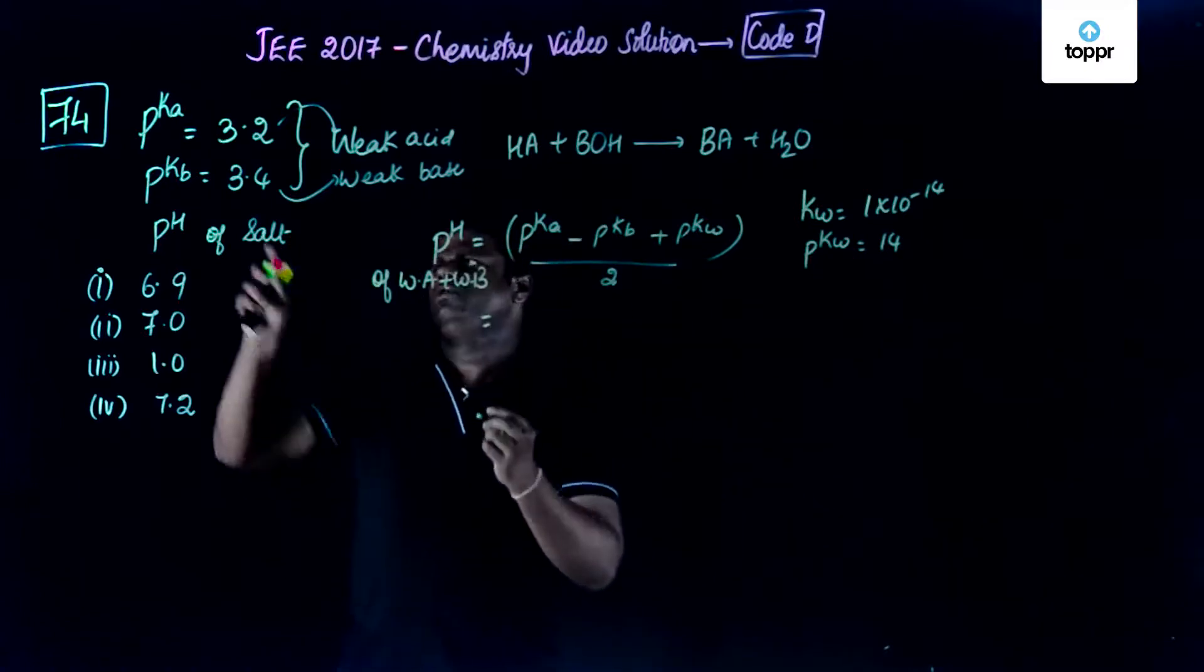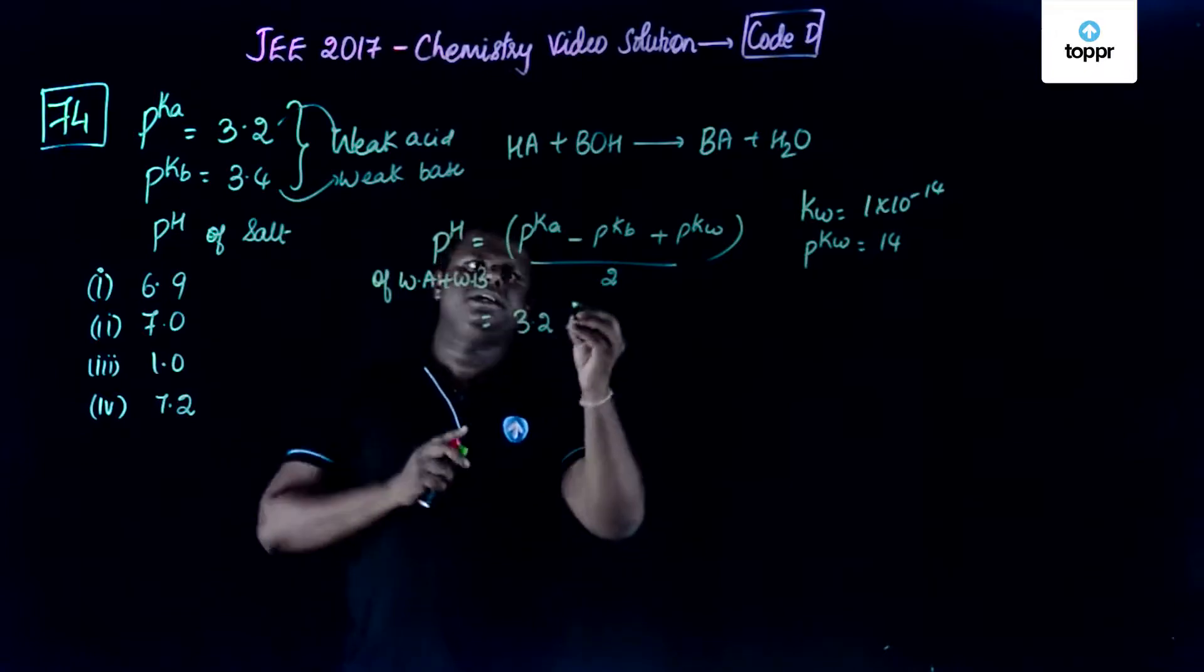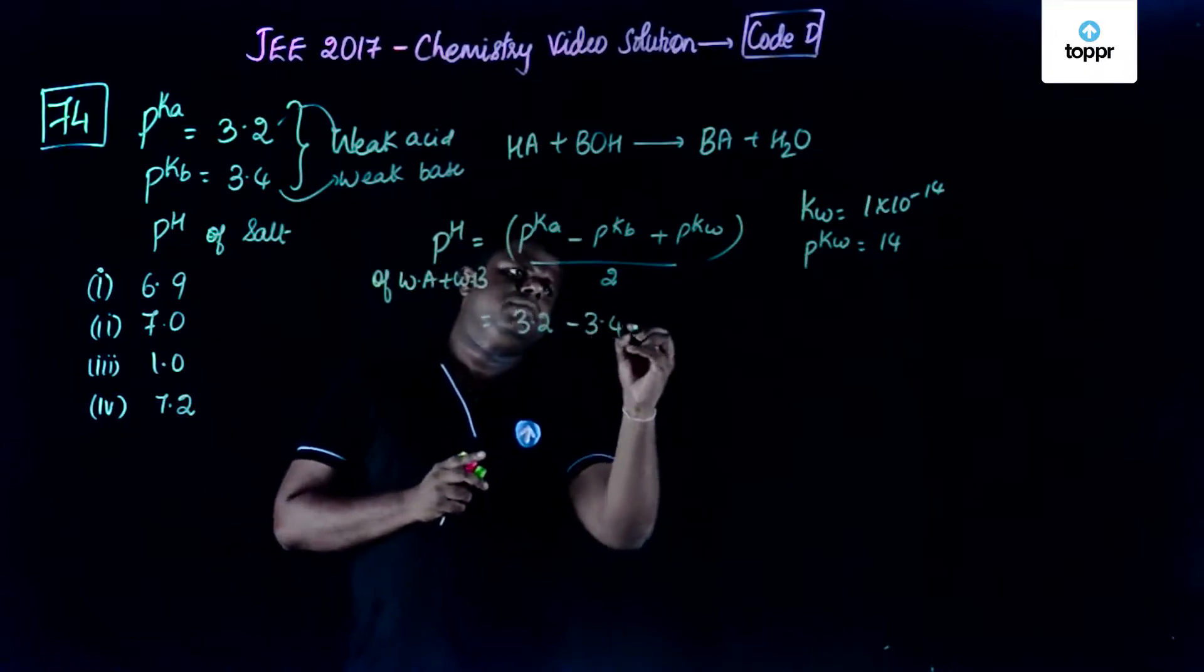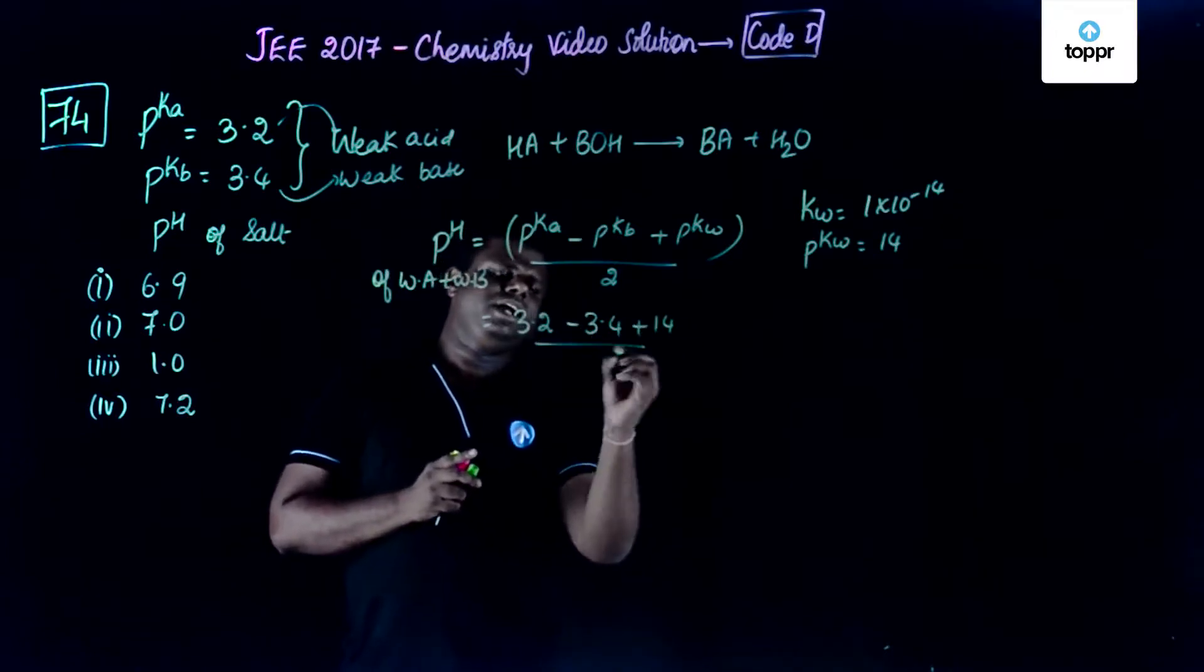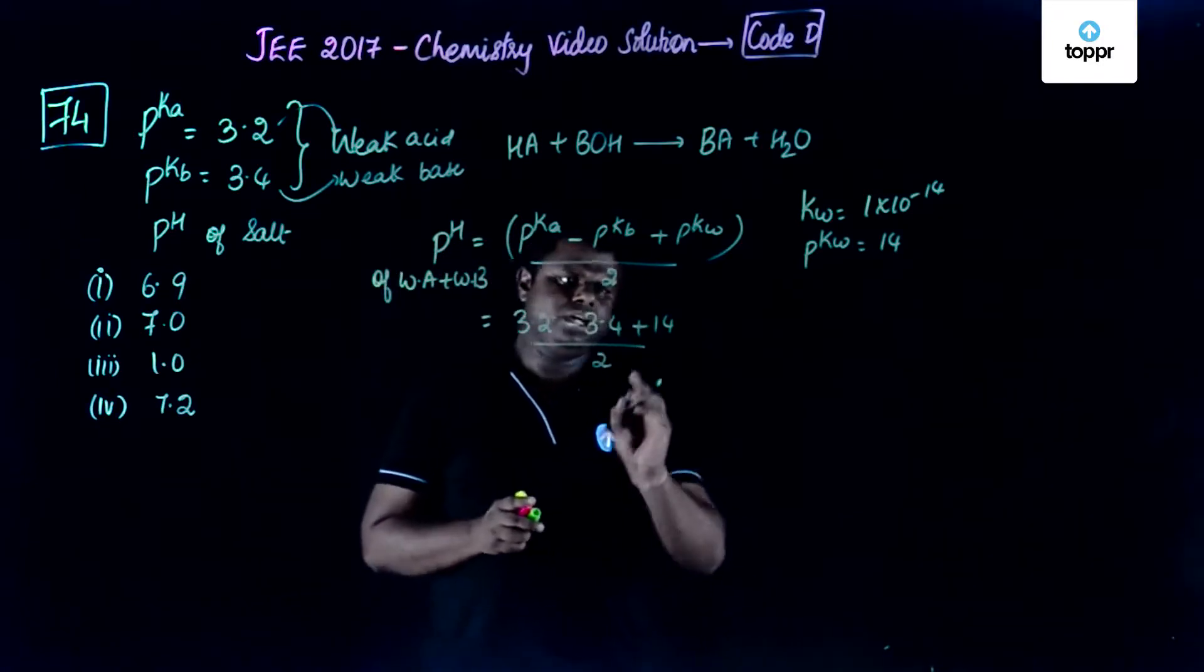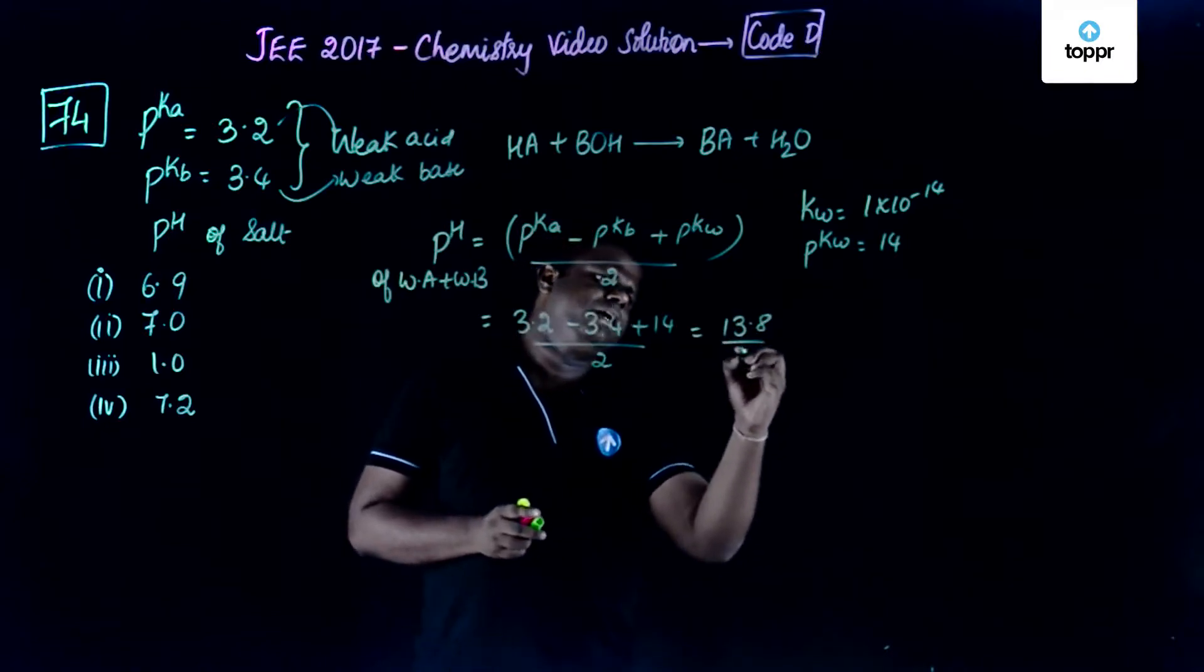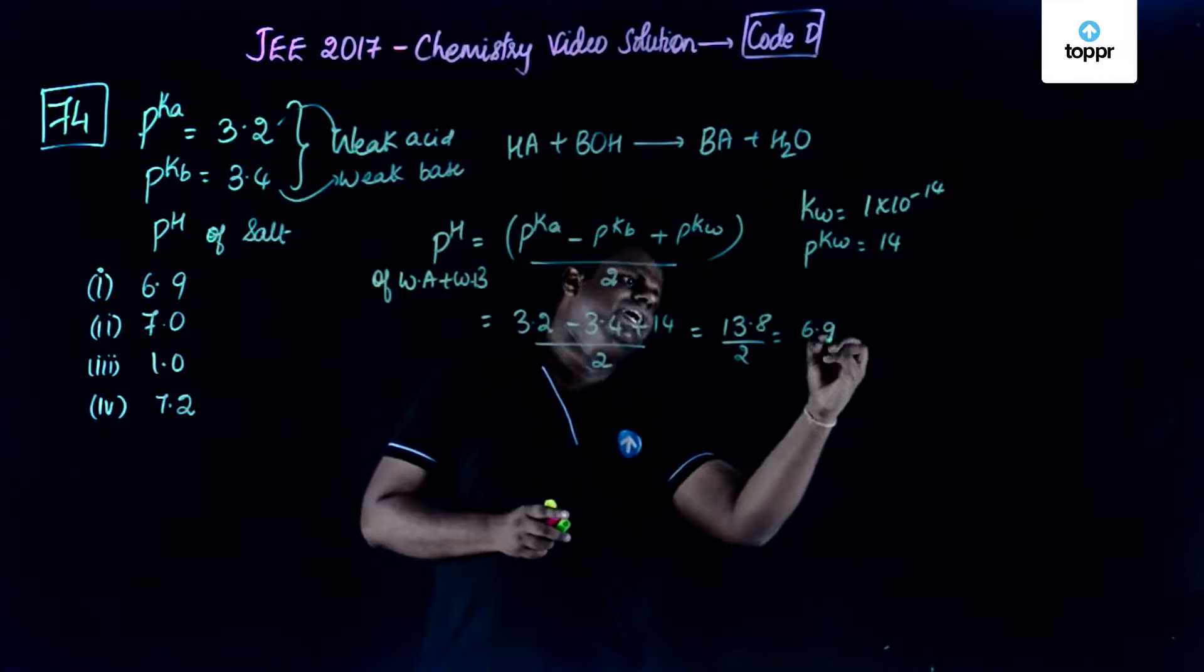So now let's substitute the value pKa is 3.2 and then pKb is 3.4 and then pKw is 14 then divided by 2. So this is going to be like 3.2 minus 3.4 will be negative 0.2. Negative 0.2 plus 14 will be equal to 13.8 by 2. So this comes to be 6.9.